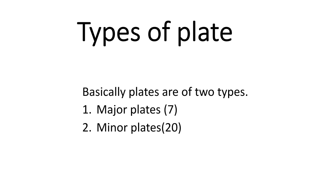Now comes to the types of plate. There are two major types of plate, major plates and minor plates. There are seven major plates in the earth and twenty minor plates.